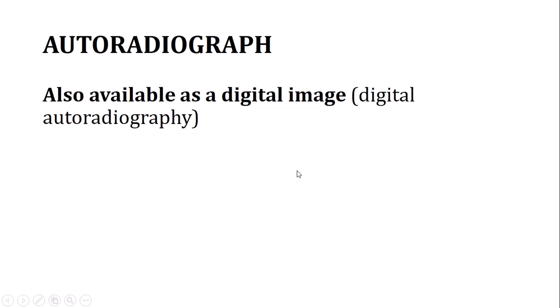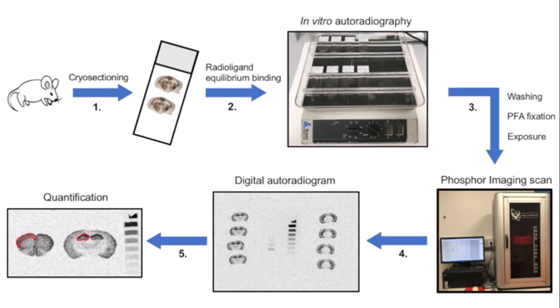We can also use digital imaging — digital autoradiography — using a computer as a processing source. With cryo-sectioning or thin sectioning, the radioactive substance is applied in vitro after taking the sample out of the system. The digital image shows different samples at different intensities, allowing quantification — for example, identifying which part of the brain contains the labelled substance.